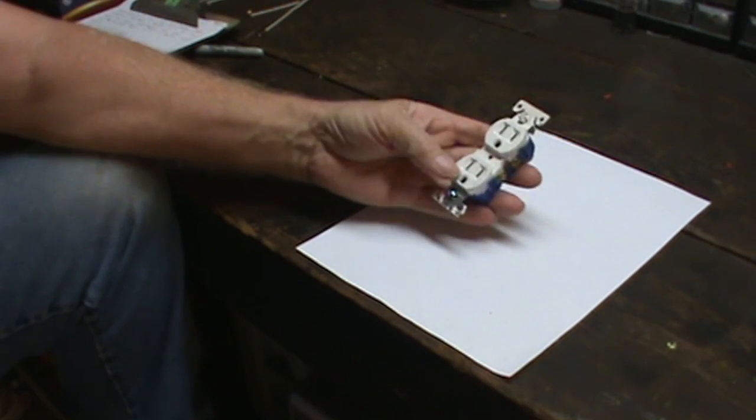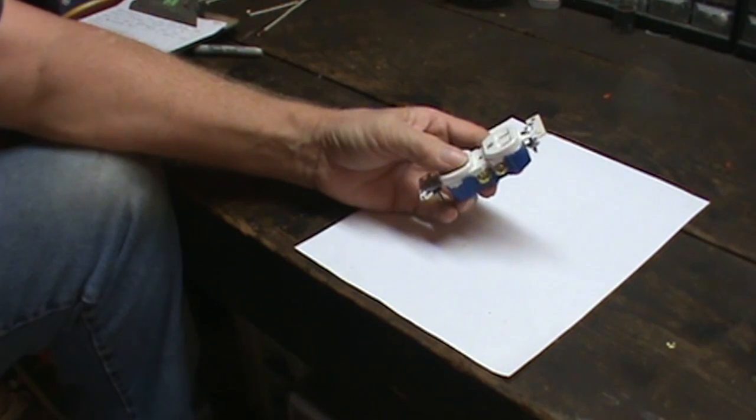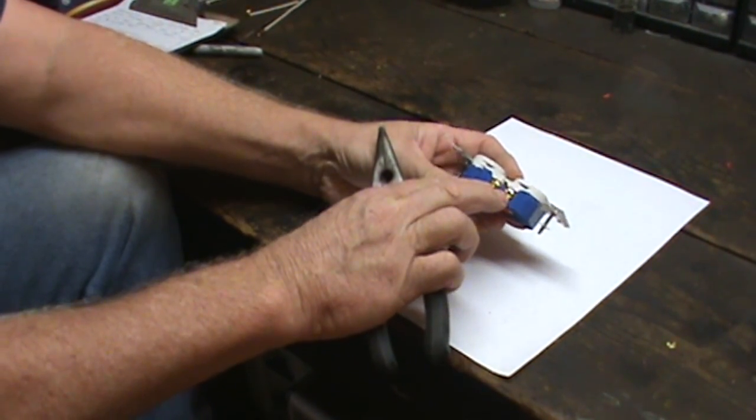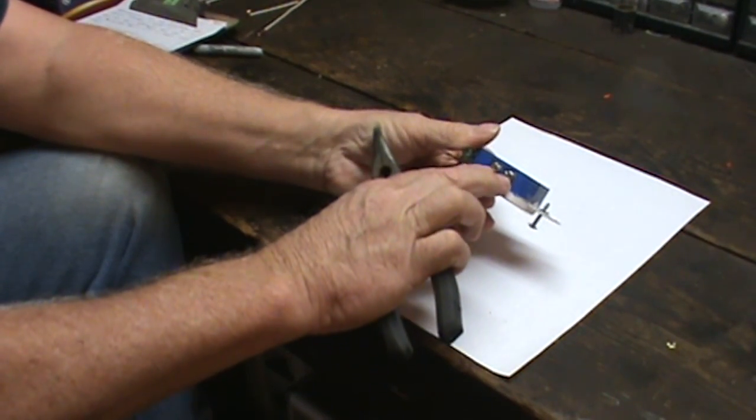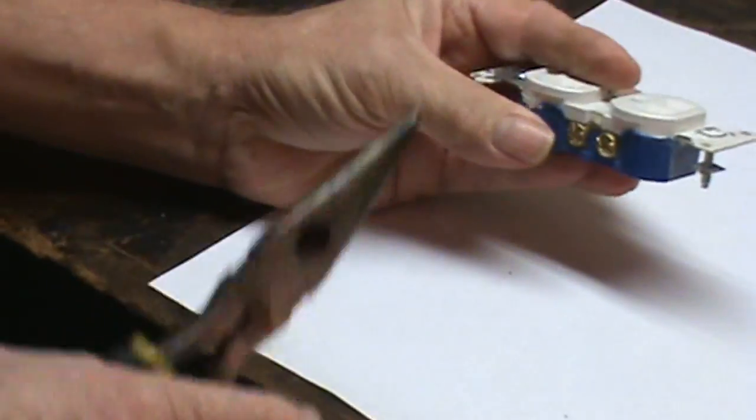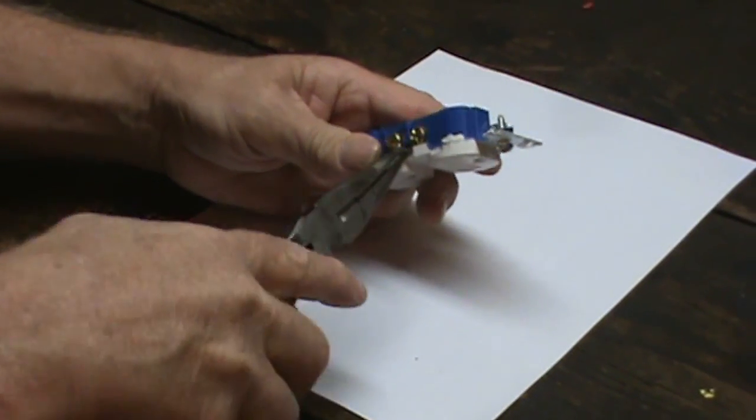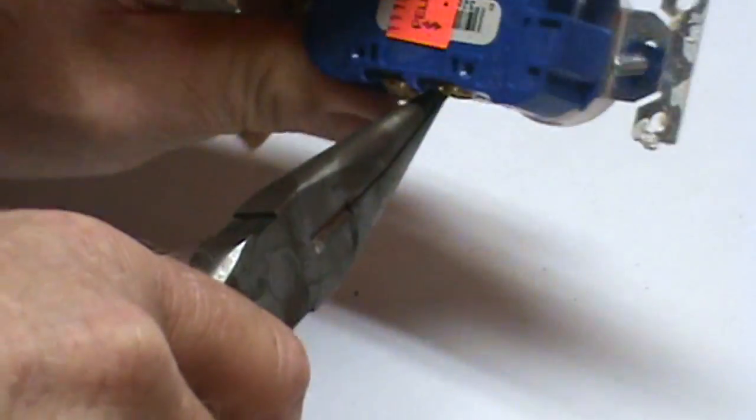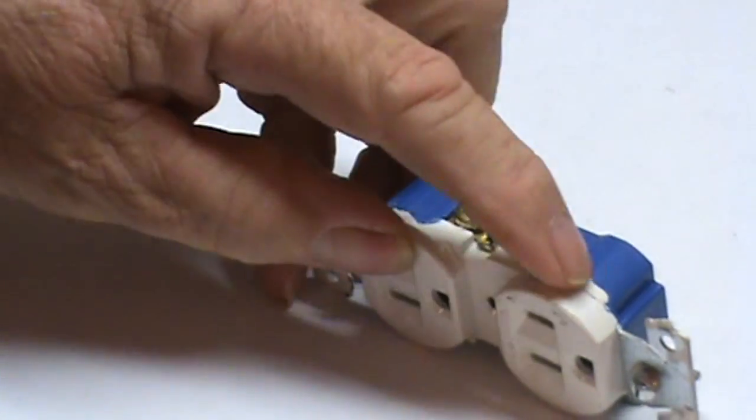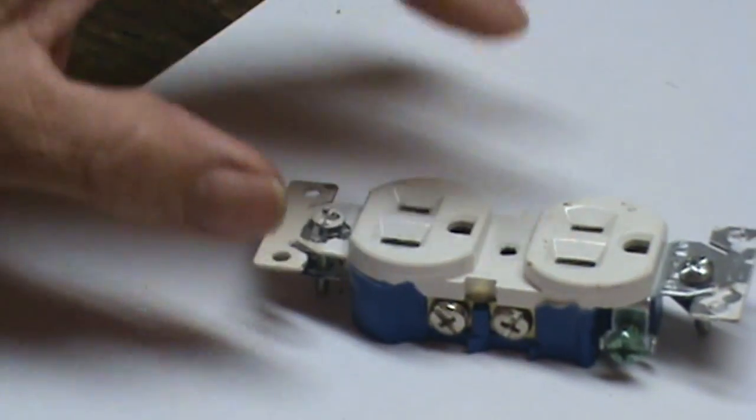You'll need eight wall sockets. These can be picked up at most hardware stores for less than a buck. On the side of the socket with the two brass screws, the other side has two silver. These are the common. But on the side with the brass screws, this is the hot side. We want to break off this little tab that's in between the screws. That separates the top socket from the bottom socket. So now it's two separate places that you can plug a plug into.